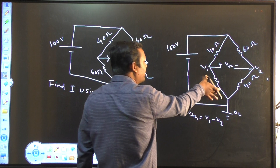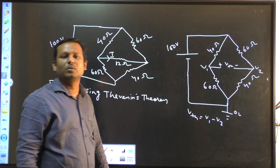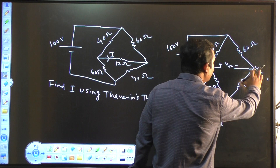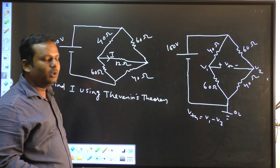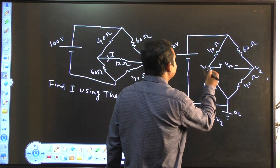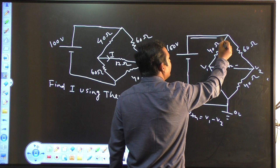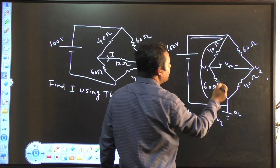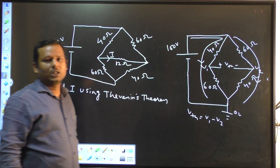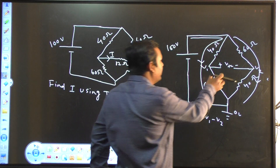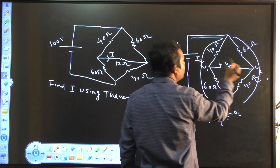V1 is the voltage across the 60 ohm resistor because this point is V1 and this point is 0. So voltage across 60 ohm resistor is V1, and across this 40 ohm resistor, voltage is V2. So V1 minus V2 will give Vth. Here the current is coming and is divided into two paths, because no current is flowing through the load since your load is open-circuited. Let this current be I1, this current be I2.